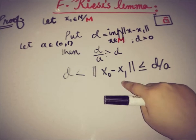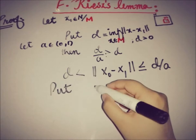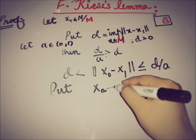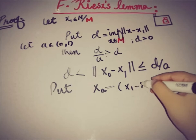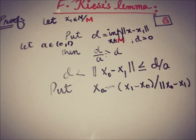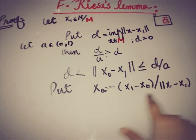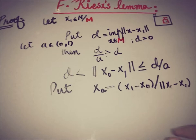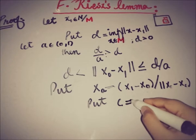Now we define x_a = (x₁ − x₀) / ‖x₀ − x₁‖. This element x_a is in N and has norm 1 — it is essentially the unit vector in the direction of x₁ − x₀. Let c = 1 / ‖x₁ − x₀‖, so x_a = c(x₁ − x₀).